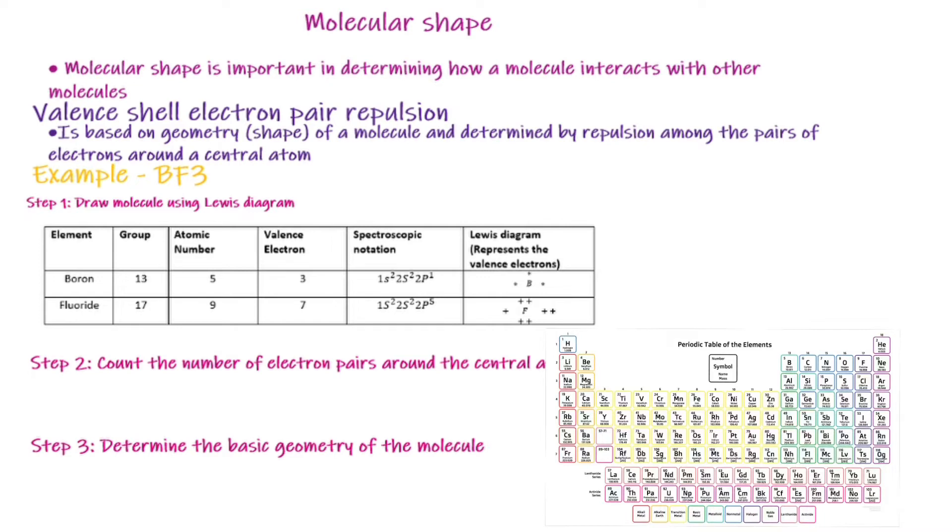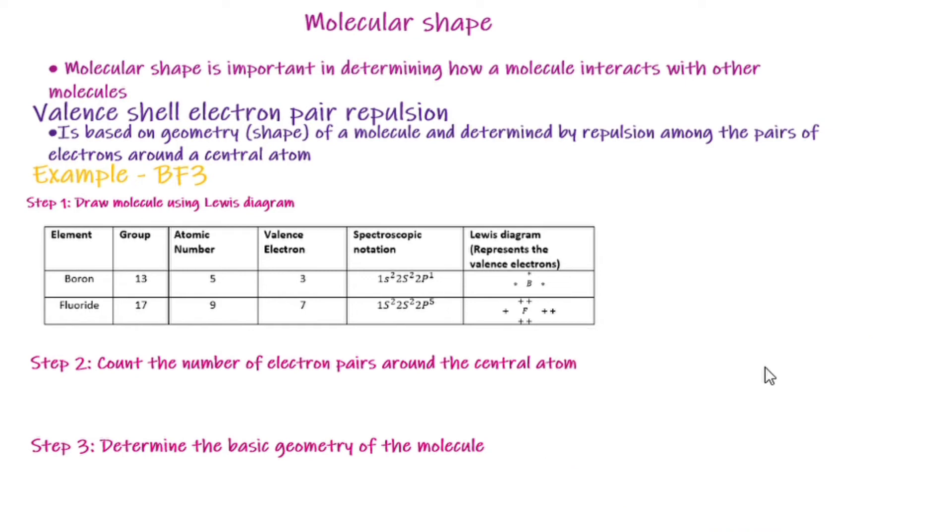If we go to fluoride, it is in group 17. It has atomic number 9. If we use the atomic number on the aufbau diagram, we'll determine the electron configuration to be 1s², 2s², 2p⁵. Therefore, fluoride has 7 valence electrons and 2 core electrons. If we take all this knowledge and draw a Lewis dot diagram structure...